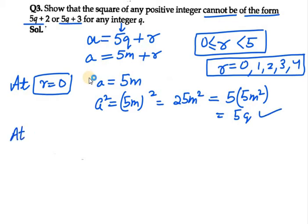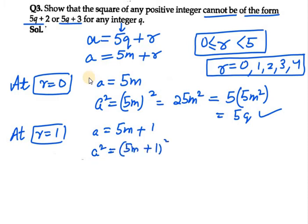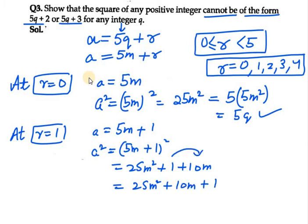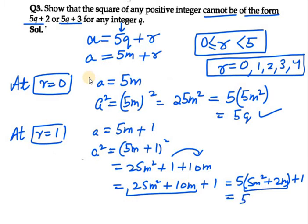At r equals 1, a becomes 5m plus 1. Squaring the terms we get (5m plus 1) squared, which equals 25m squared plus 10m plus 1. Rearranging: taking 5 common from the first two terms gives 5(5m squared plus 2m) plus 1. Whatever is in the bracket can be written as q. So this is in the form of 5q plus 1, and it will be a perfect square.